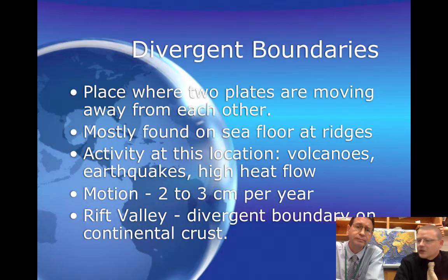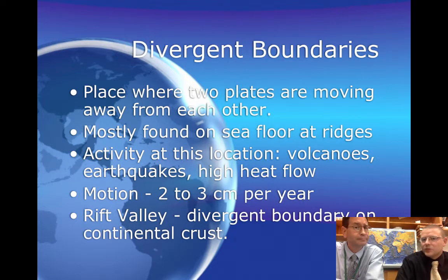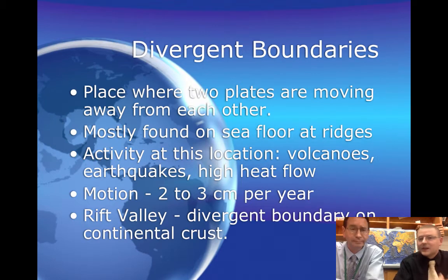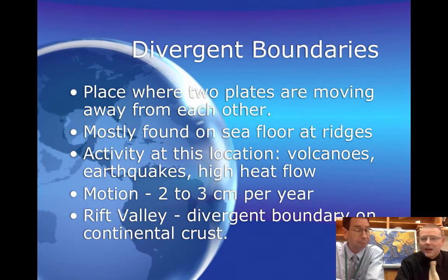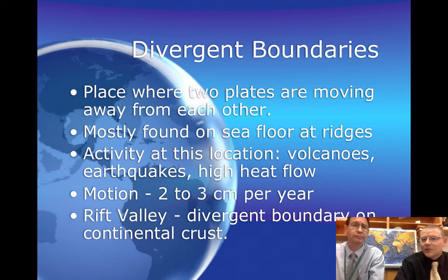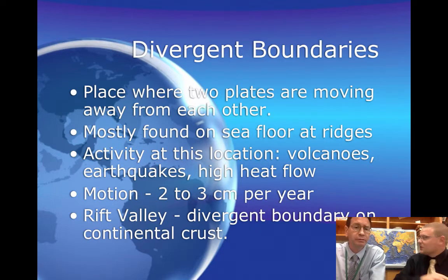The other type of boundary is a divergent boundary. In divergent boundaries, we're going to have two plates moving away from each other — dividing. D for divide and C for collide. We see this a lot at places known as mid-ocean ridges.